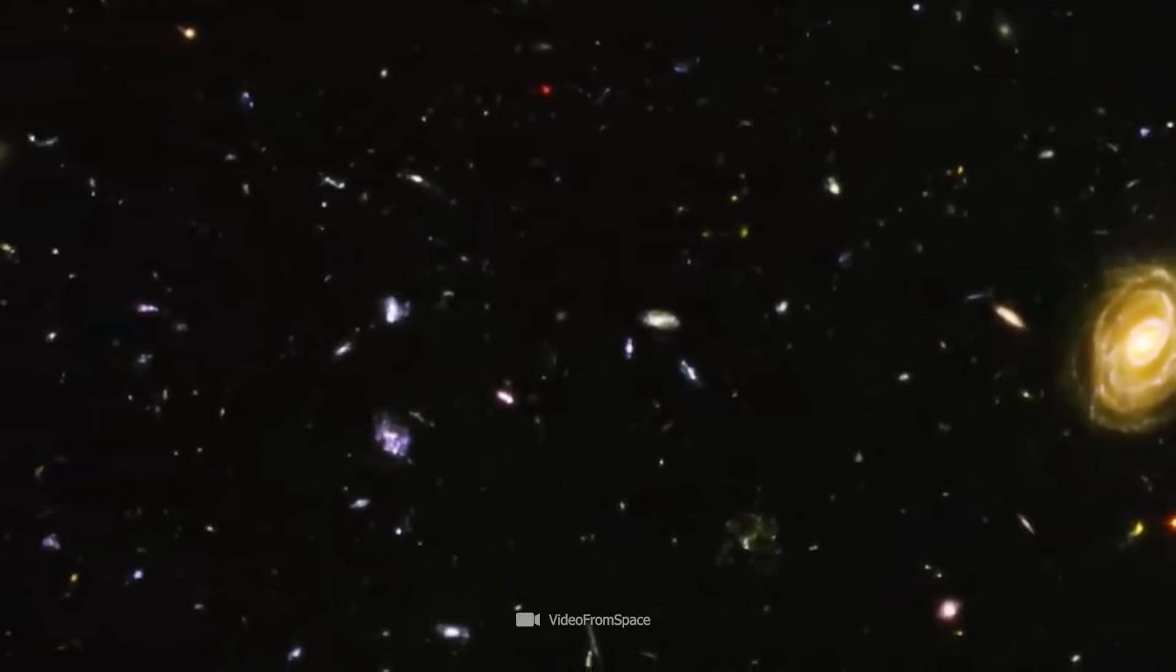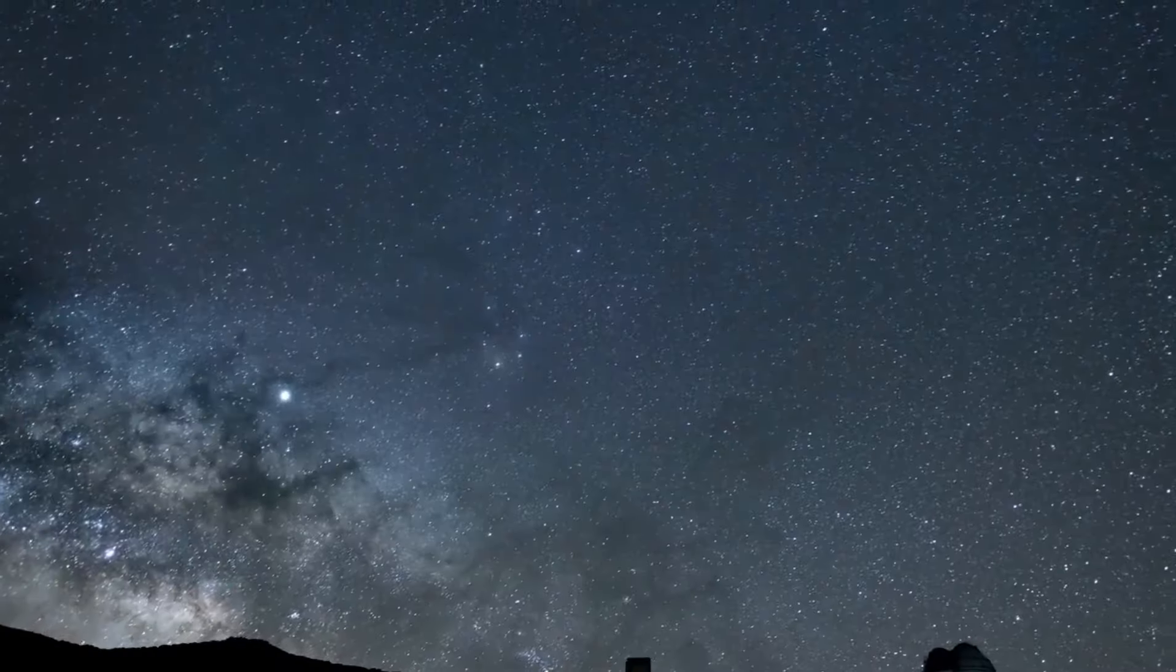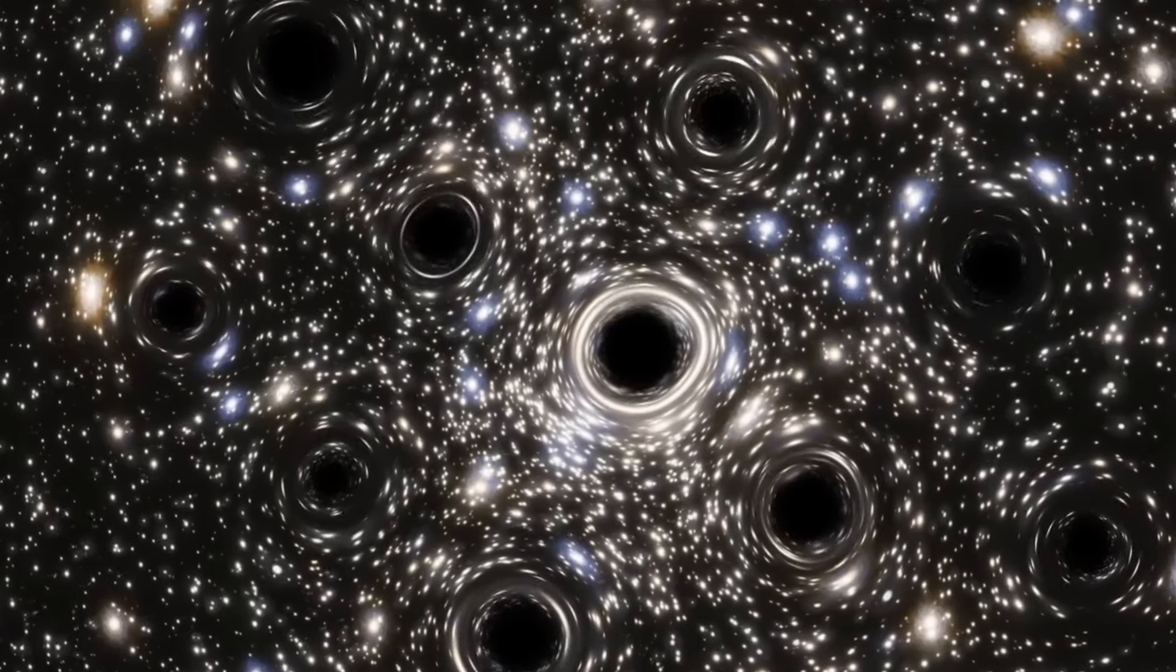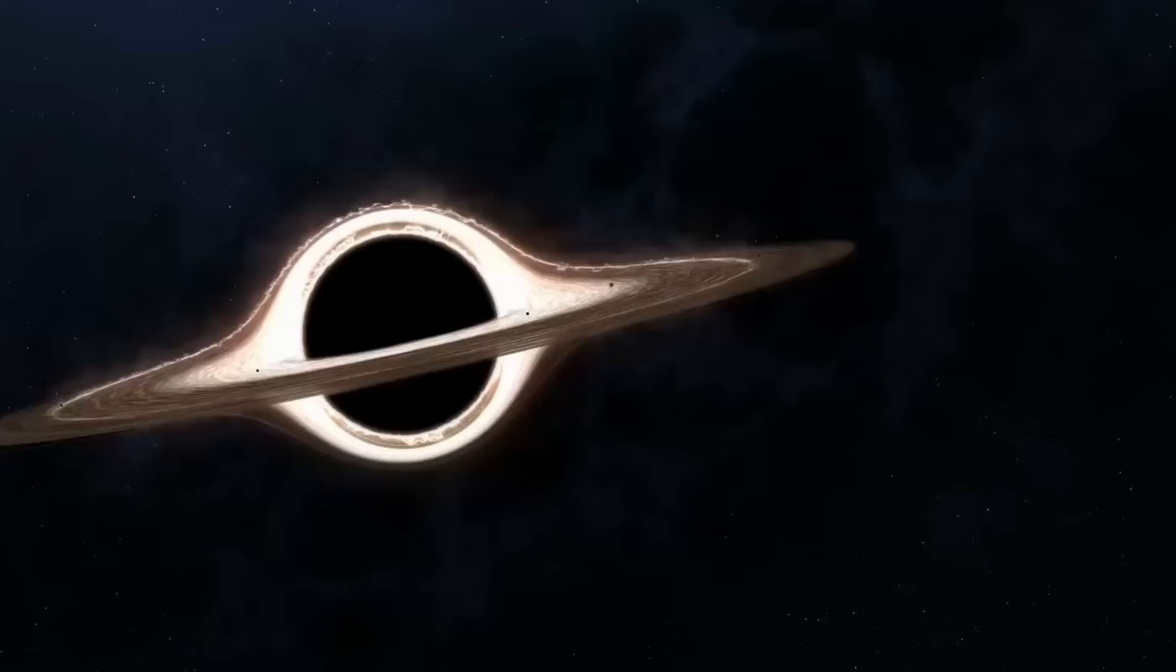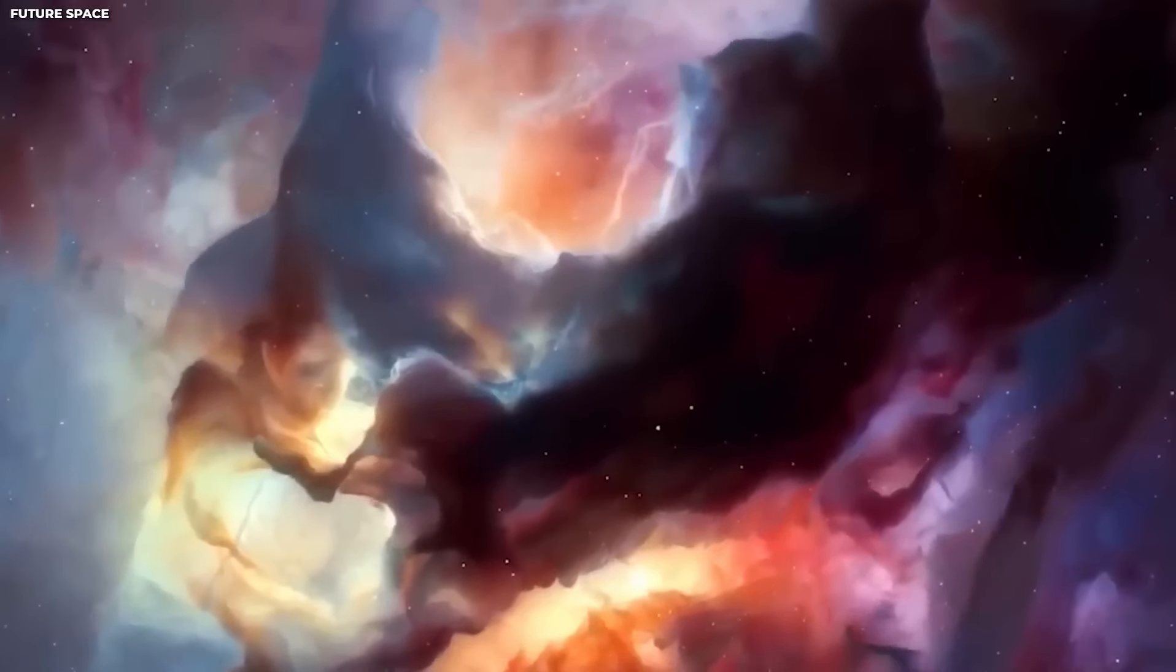The answer is by using the gravitational lensing effect. This phenomenon occurs when the light from a distant object is bent and amplified by the gravity of a massive object in the foreground, such as a galaxy cluster. This creates a distorted and magnified image of the background object, like a cosmic magnifying glass.